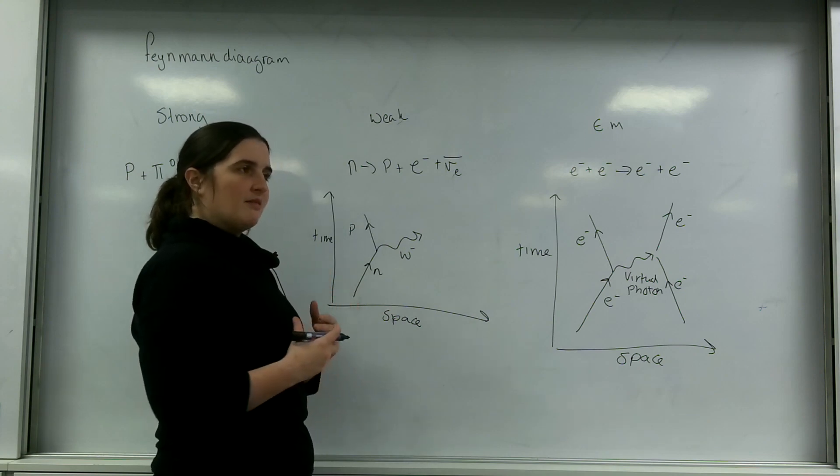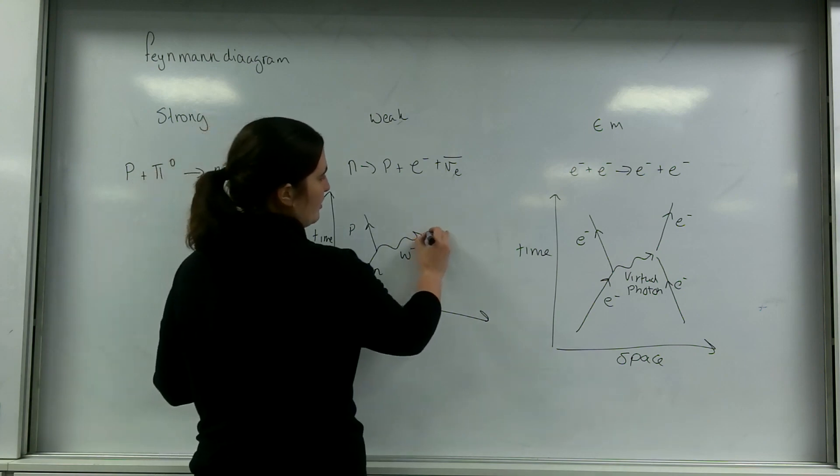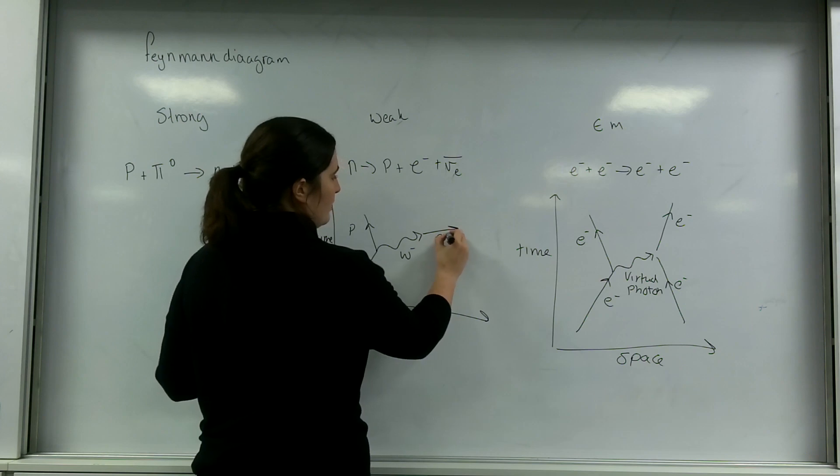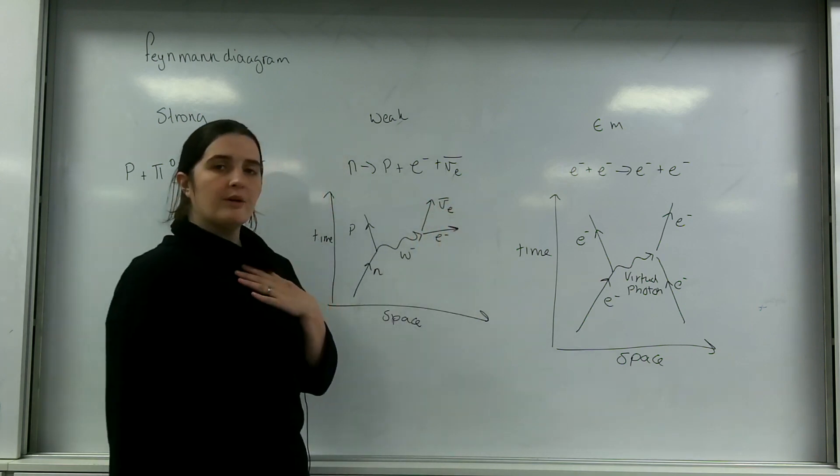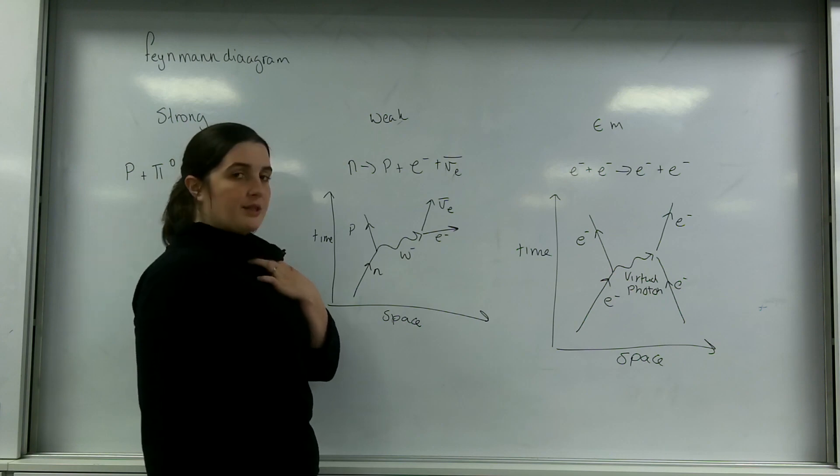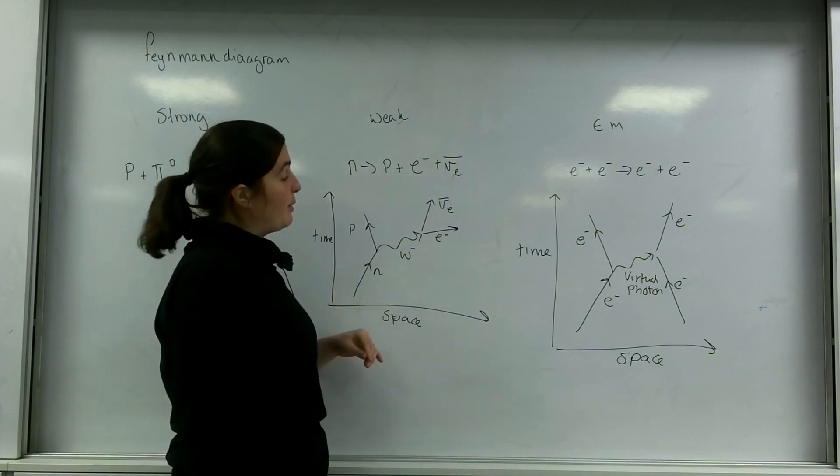This boson then gives its energy to an electron and an anti-electron neutrino. It's important to note, of course, the anti-electron neutrino has to be there to conserve lepton number.